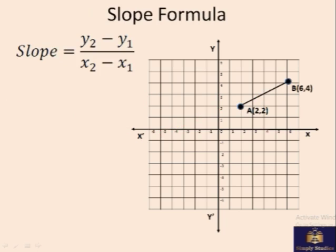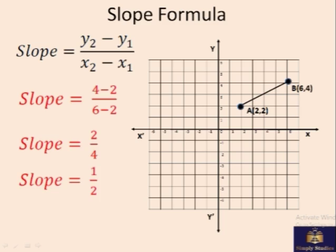Another formula is slope formula. If you want to find out the slope or gradient of this line, the formula is the difference between the y-coordinates divided by the difference between the x-coordinates, which in this case will be 4 minus 2, that's the y-coordinates of these two points A and B, divided by the two x-coordinates, that is 6 and 2, gives you 2 by 4 or half. So half is the slope of this line.